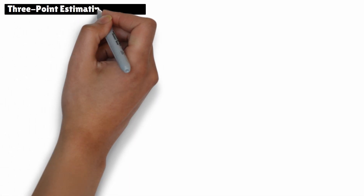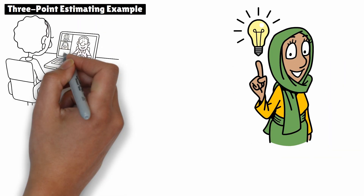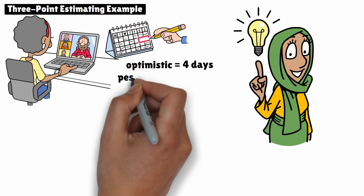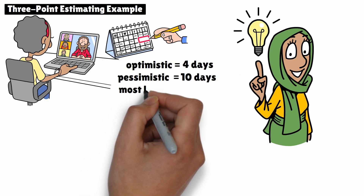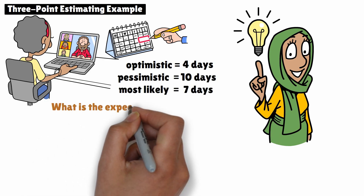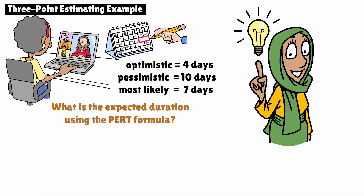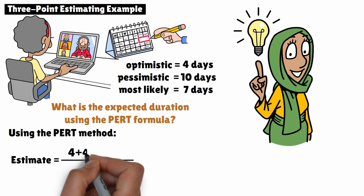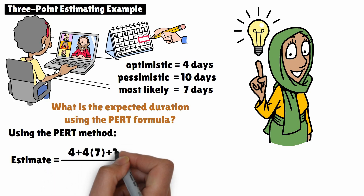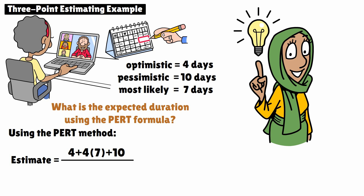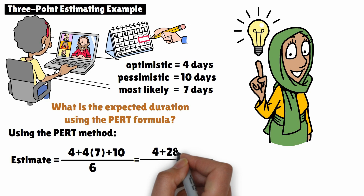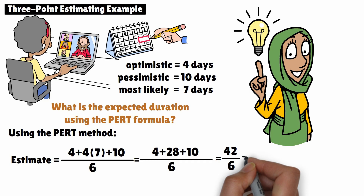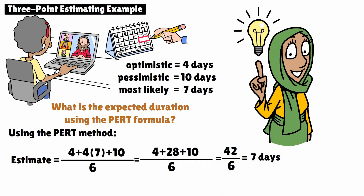Let's take a look at an example. A project manager is estimating the duration of a task. The optimistic duration is four days, the pessimistic duration is ten days, and the most likely duration is seven days. What is the expected duration using the PERT formula? Using the PERT method, the estimate equals four (optimistic) plus four times seven (most likely) plus ten (pessimistic), divided by six. This becomes four plus 28 plus 10, divided by six, which equals 42 divided by six — the result is seven days.